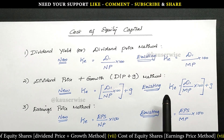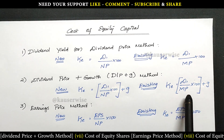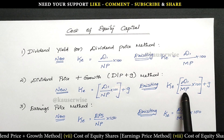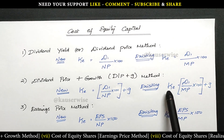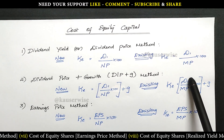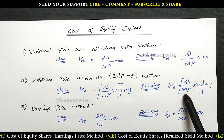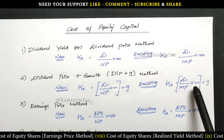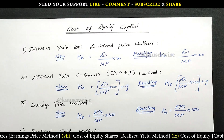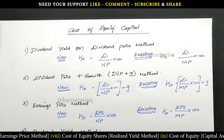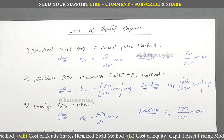For existing shares, instead of NP you have to consider market price per share. So KE is equal to dividend per share divided by market price per share into 100, plus growth rate. Now let's see the numerical problem for better understanding of this model.